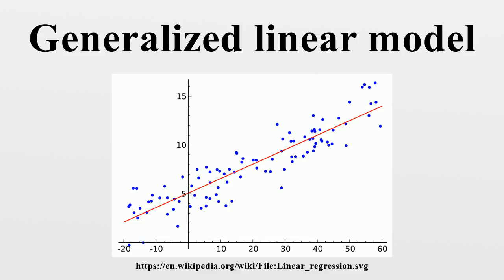Generalized additive models are another extension to GLMs in which the linear predictor eta is not restricted to be linear. In the covariates, the predictor is the sum of smoothing functions applied to the predictors. The smoothing functions are estimated from the data. In general, this requires a large number of data points and is computationally intensive.